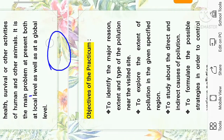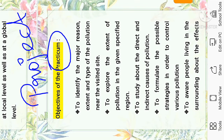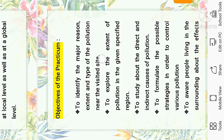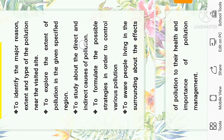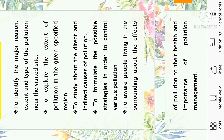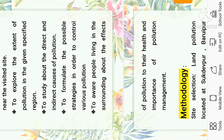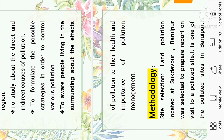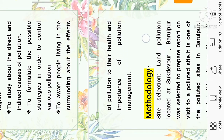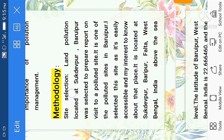The objectives of the practicum are: to identify the major reason, extent, and type of pollution near the polluted site; to explore the extent of pollution in the given specified region; to study the direct and indirect causes of pollution; to formulate possible strategies to control various types of pollution; and to make people living in the surrounding aware about the effects of pollution on their health and the importance of pollution management.